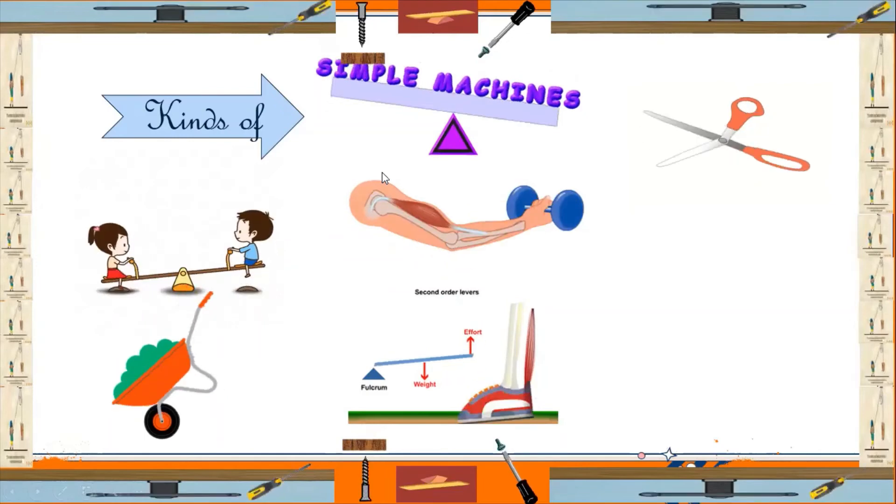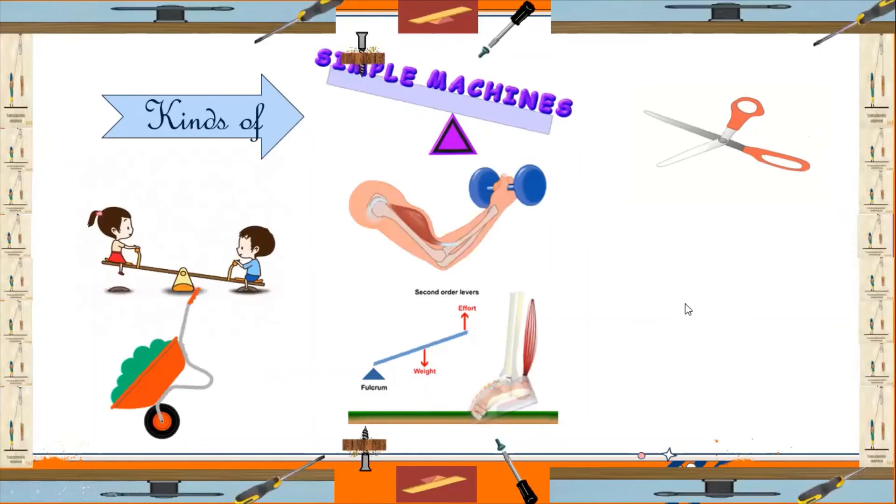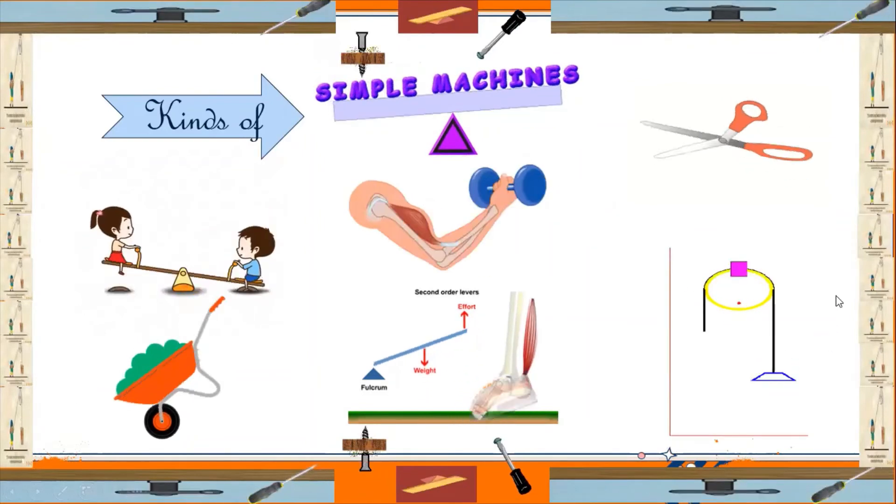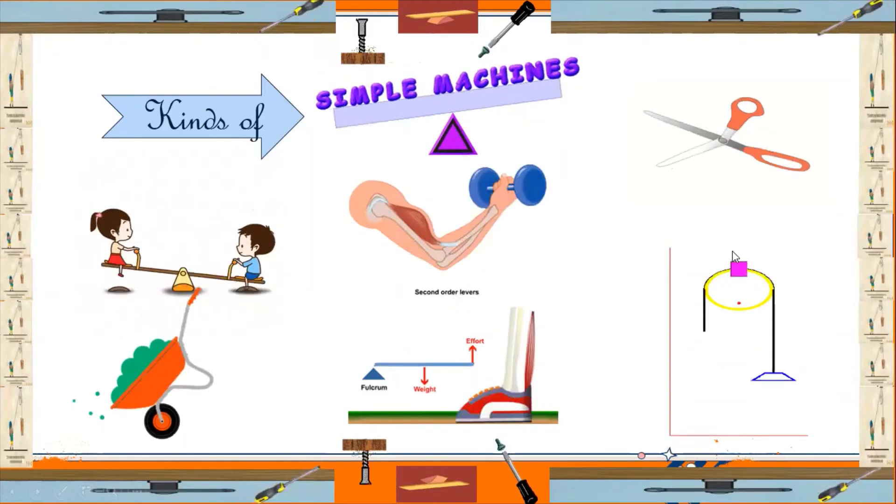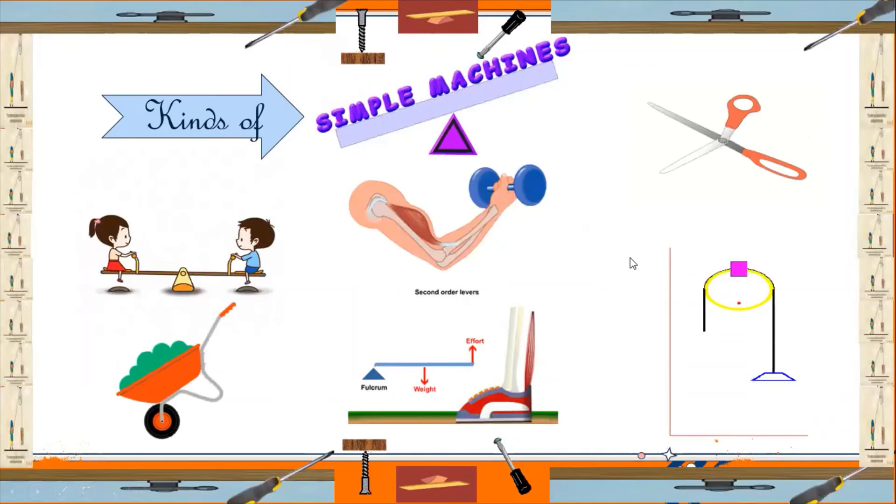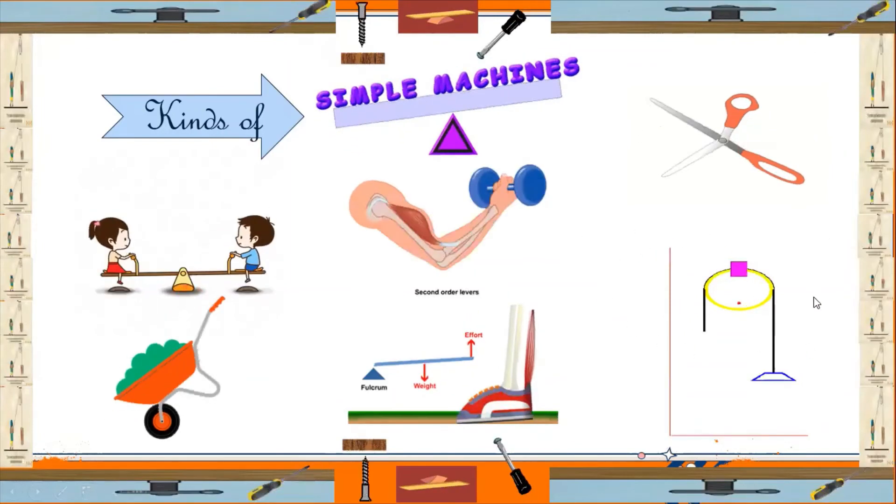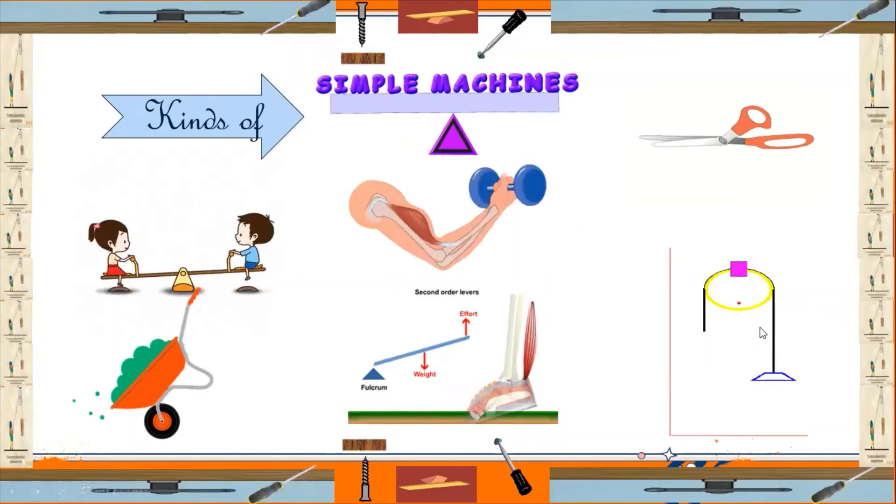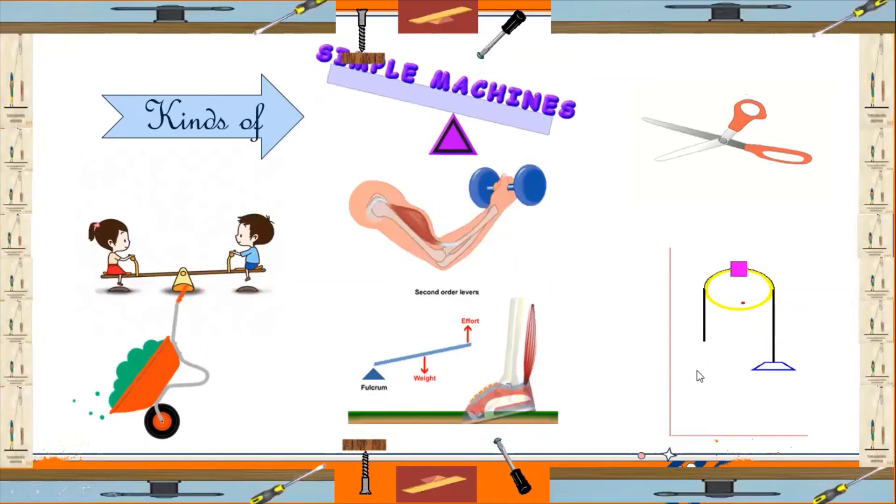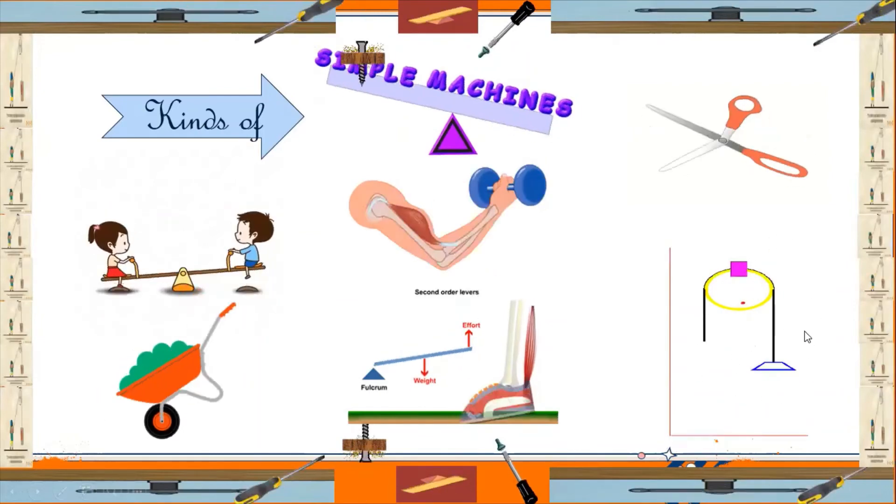Pulley. A pulley is a simple machine which is made of a wheel. The wheel of a pulley turns on an axle. There is a groove around the rim of the pulley which holds a rope. When the rope is pulled, the pulley lifts the heavy load.